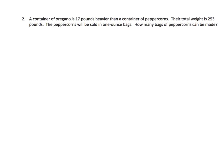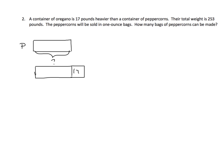What can we draw? We don't know how much oregano, nor do we know how many pounds of peppercorns there are. But we can draw a picture. I can draw a picture of peppercorns — we don't know what that is. And I can draw a picture of oregano. The representation of oregano is going to be larger by 17 pounds, so we'll put the 17 in that little blank there. We know that the total of both of these is 253 pounds.